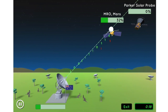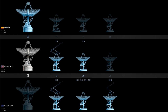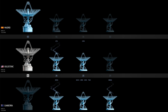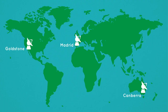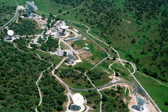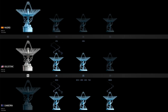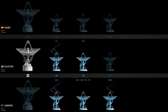But before we get into this stuff, we need to know what is the DSN, or the Deep Space Network. The DSN is how NASA talks to far-away spacecraft. The Deep Space Network has three big antenna complexes evenly spaced around the world: one in California, one in Spain, and one in Australia. So as the world turns, at least one of these antenna complexes can always contact spacecraft no matter where they are in the sky above Earth.